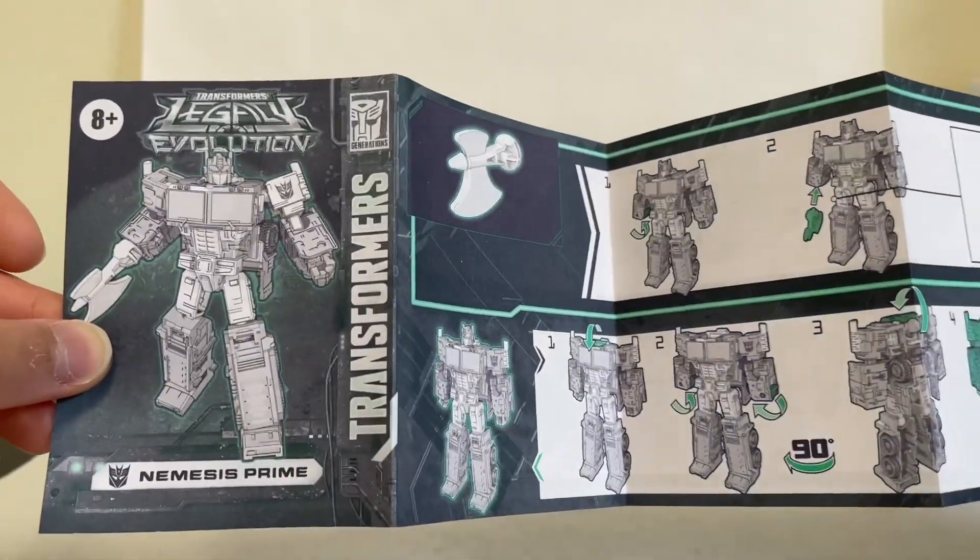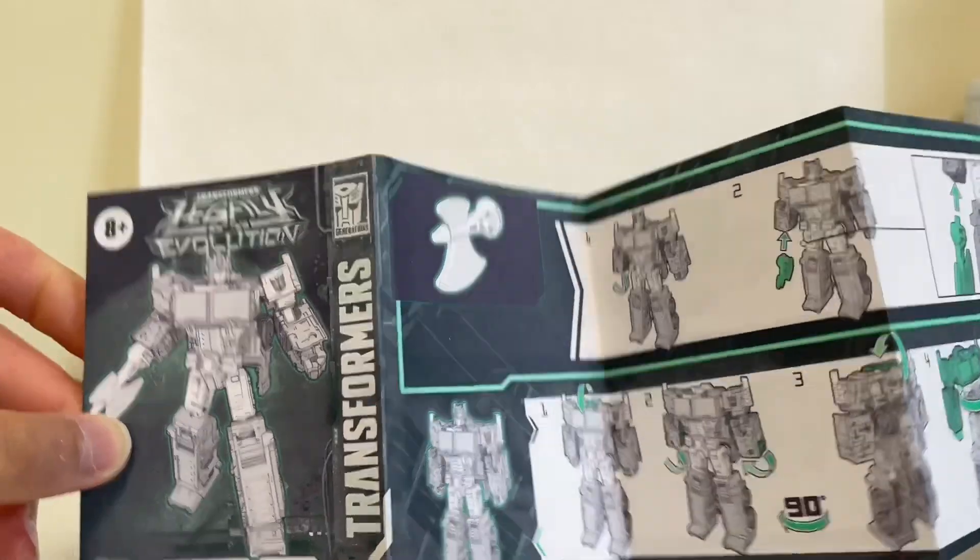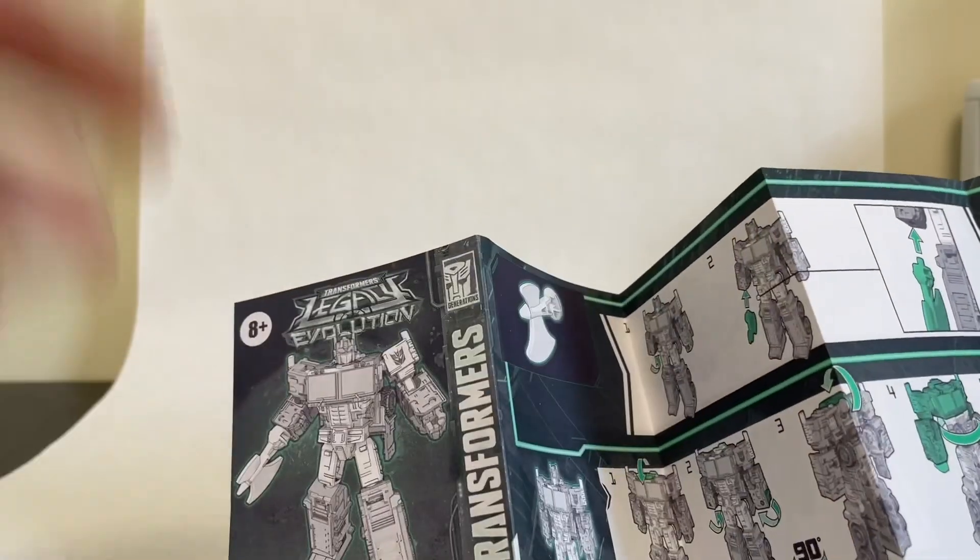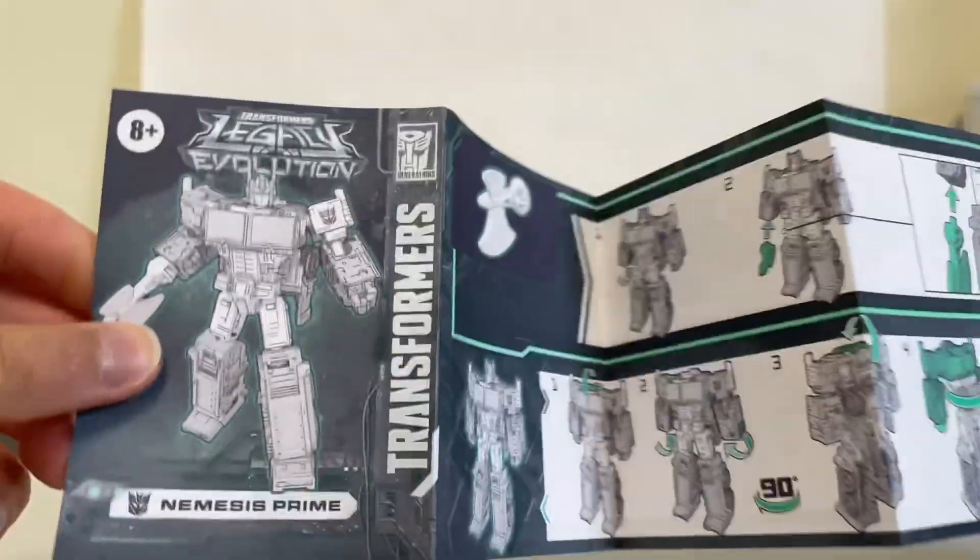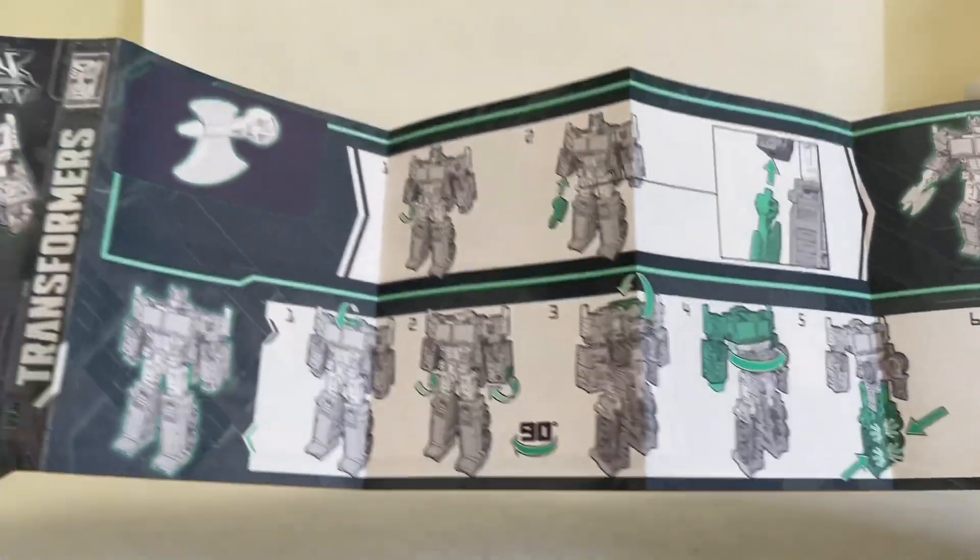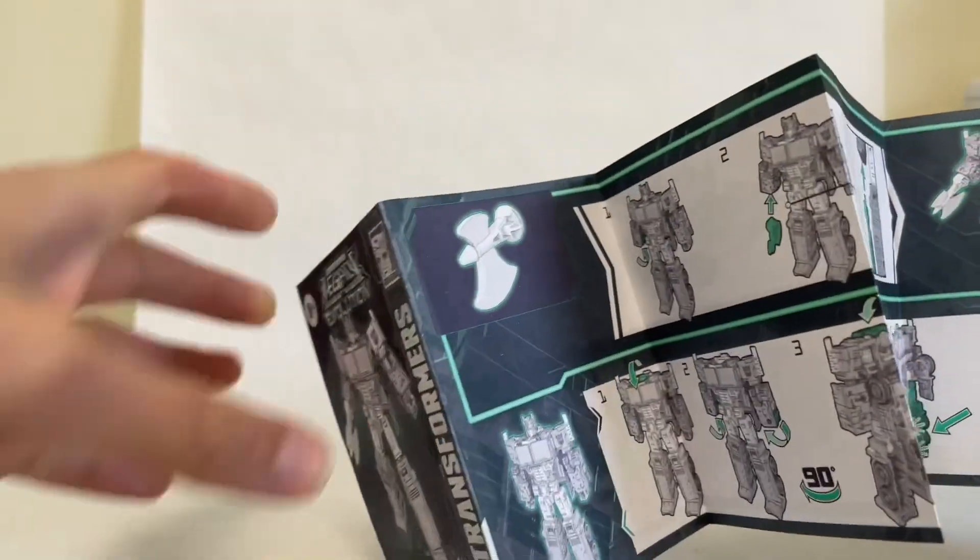So now he has an axe. Now I am disappointed that Nemesis Prime does not come with the standard ion blaster, so Nemesis Prime comes with the axe, and standard Prime comes with the blaster. Still cool that we get both accessories, but I would have liked to see the axe in an orange repaint for Optimus later down the line.